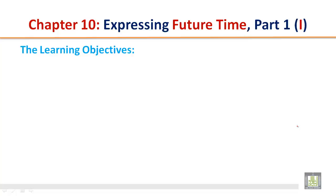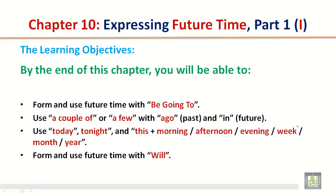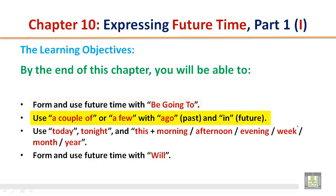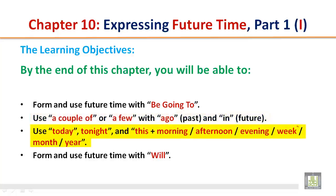The Learning Objectives. By the end of this chapter you will be able to: form and use future time with be going to; use a couple of or a few with ago in the past and in the future; use today, tonight, and this plus morning, afternoon, evening, week, month, or year; and form and use future time with will.